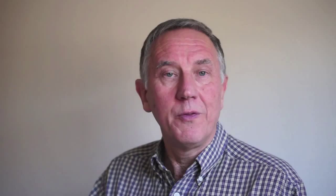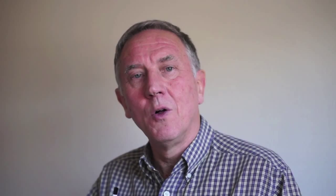Non-determinism arises for two reasons, both fundamentally human. First, operators of a system will behave differently at different times depending on their state of mind, how tired they are, or whether they are rushing — they will not always respond to system output in the same way. Second, complex systems have components managed by different organizations, updated at different times. Without appropriate coordination, a system may produce different outputs on different occasions because some underlying component has been updated.